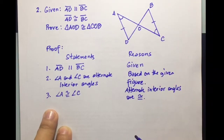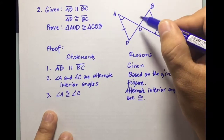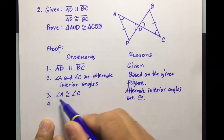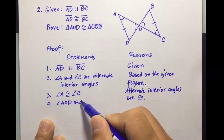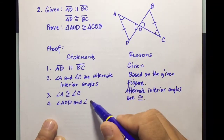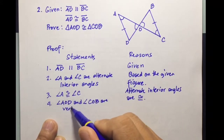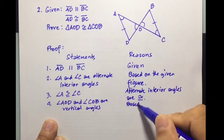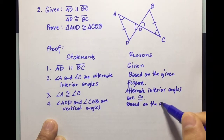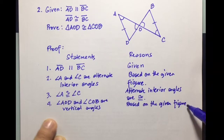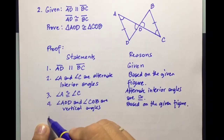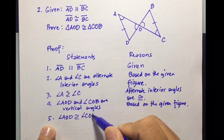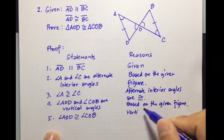Looking at the figure, angle A-O-D and angle C-O-B are vertical angles, based on the given figure. Since these are vertical angles, angle A-O-D is congruent to angle C-O-B. The reason is: vertical angles are congruent.